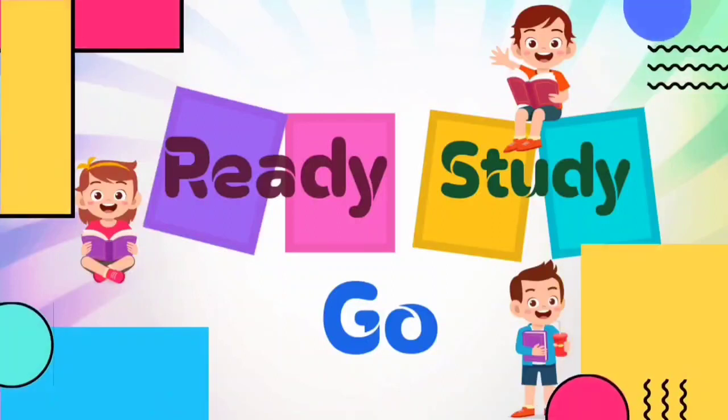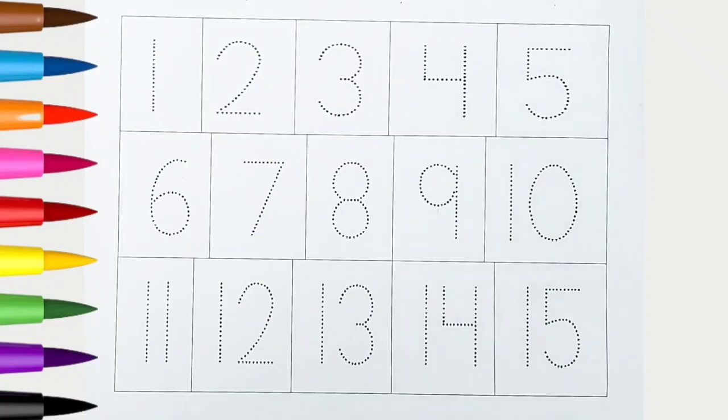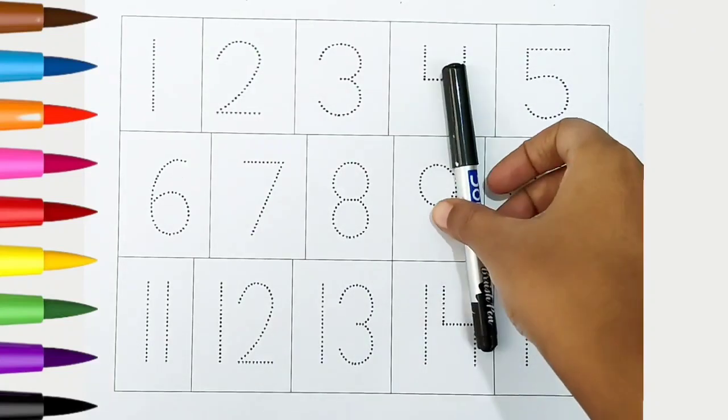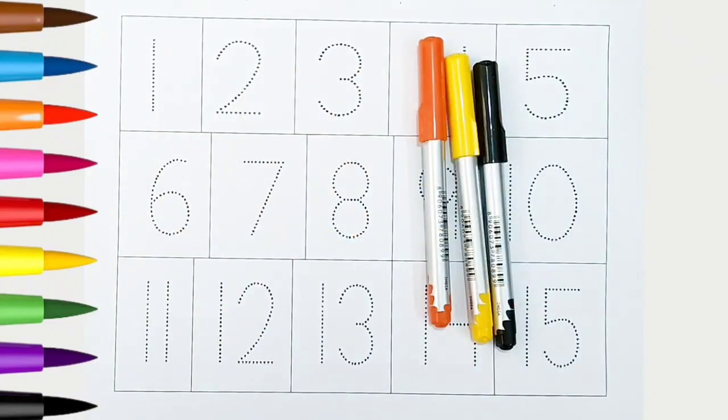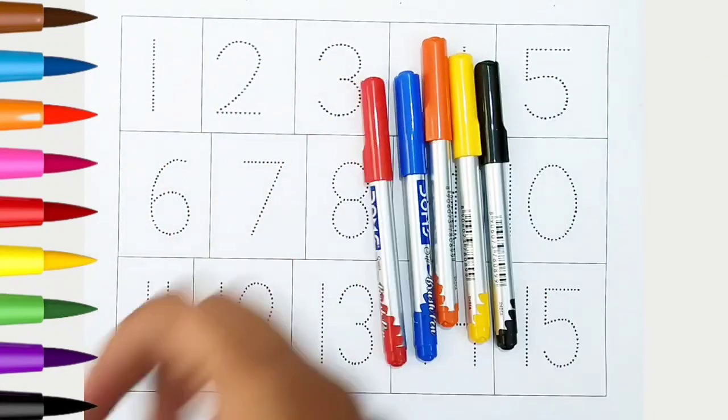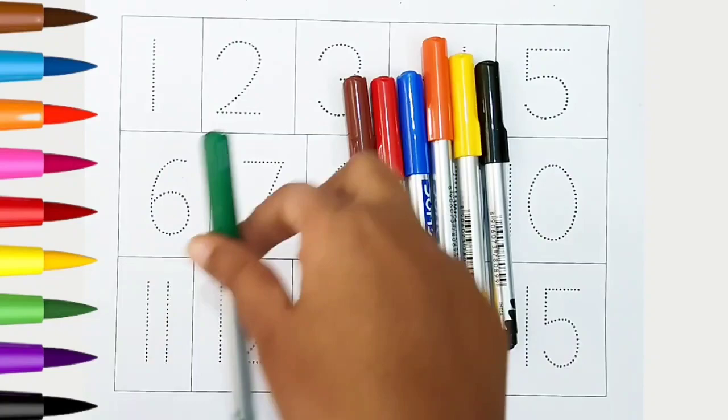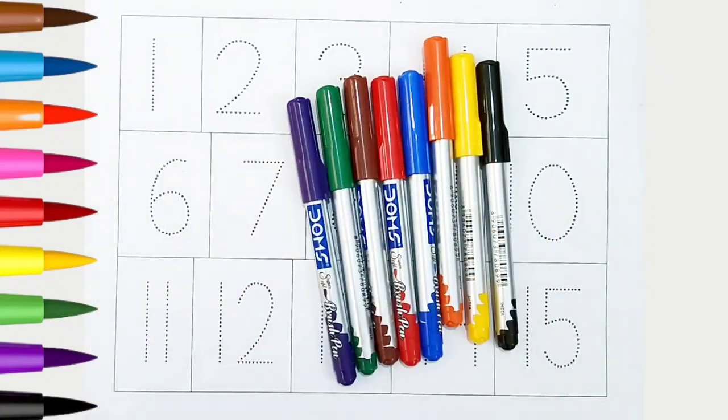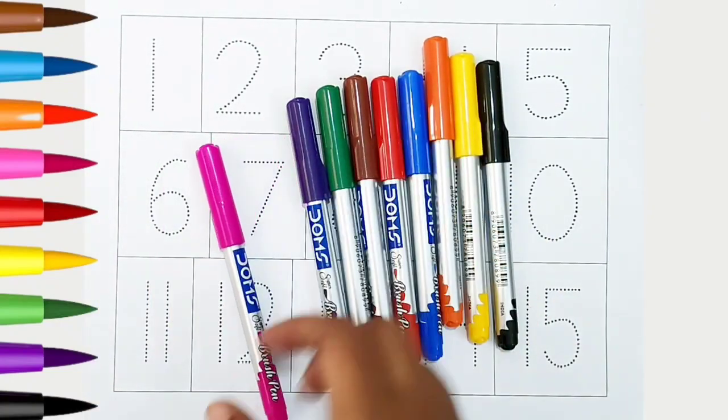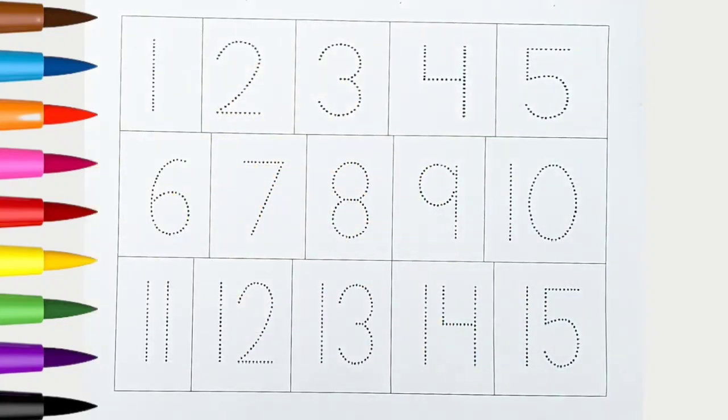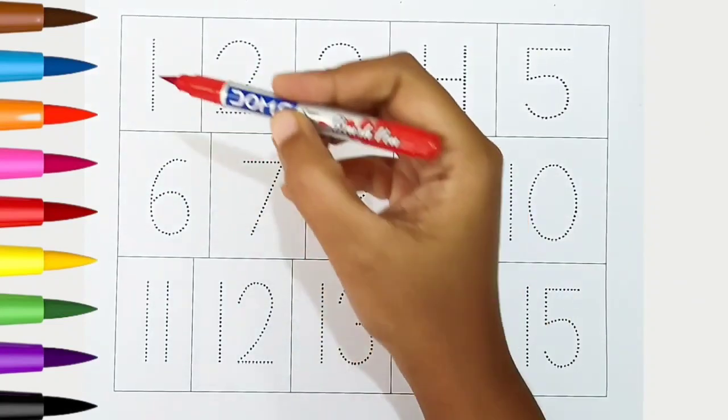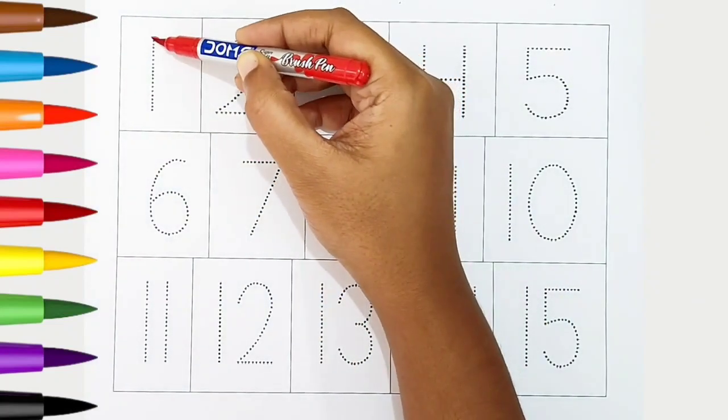Ready, study, go! Hi kids. Black color, yellow color, orange color, blue color, red color, brown color, green color, violet color, pink color. Hi kids, today we can learn the numbers from 1 to 15. Let's begin.